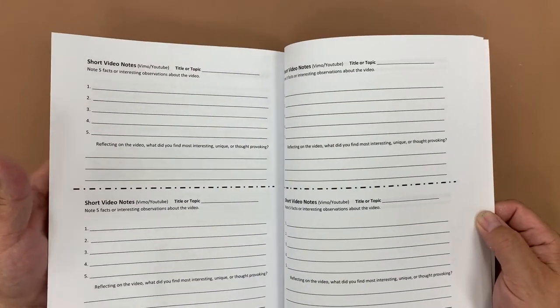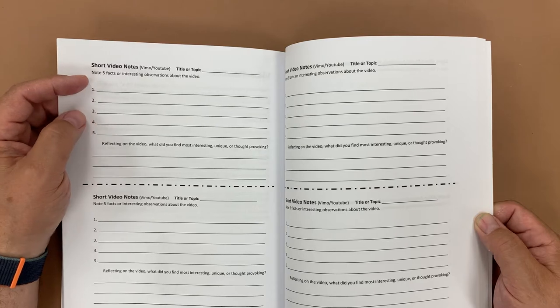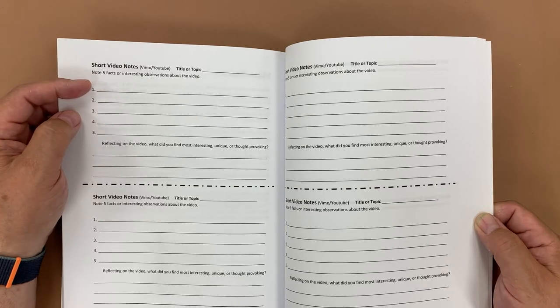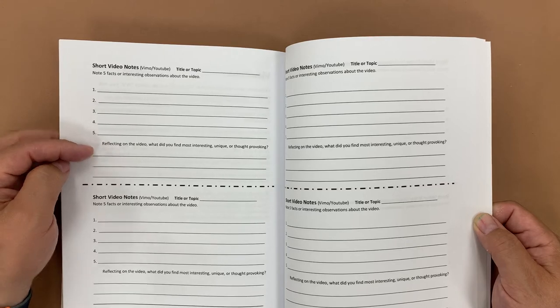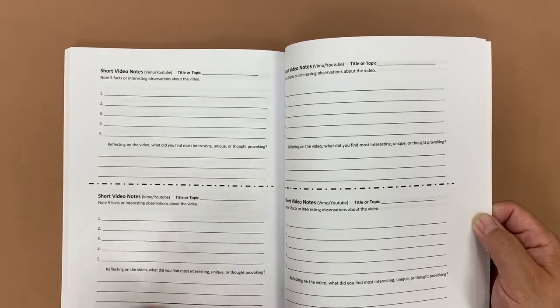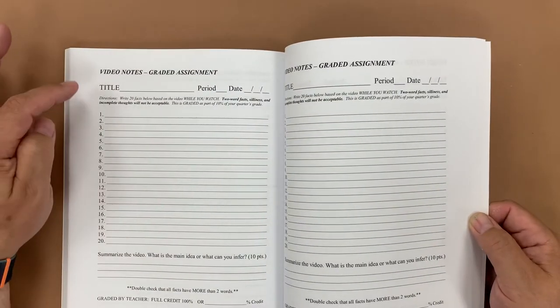Then we have some video note pages. So if there's a short YouTube video that we want to show to students, they can actively participate by writing five facts and then reflect on the video something that they found that was interesting, unique, or thought-provoking. And then I have a long format video page as well.